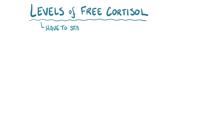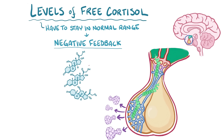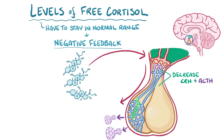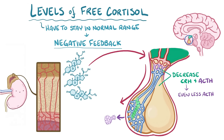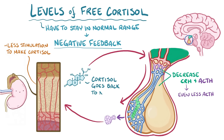For all this to work properly, the levels of free cortisol have to stay within the normal range. To do that, the body uses negative feedback, which means that high levels of cortisol tell the hypothalamus and pituitary gland to decrease their secretion of CRH and ACTH, respectively. Less CRH also tells the pituitary gland to make less ACTH, so the pituitary ends up with two reasons not to make ACTH. With less ACTH floating around, the zona fasciculata gets less stimulation to make cortisol, and eventually cortisol levels go back down to the normal range.